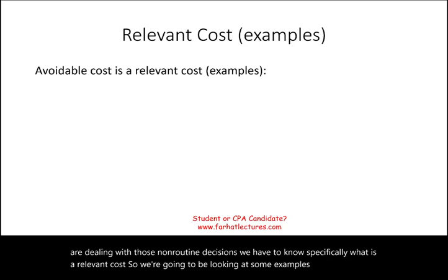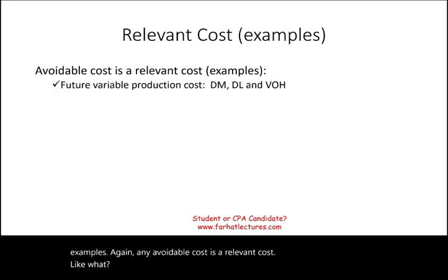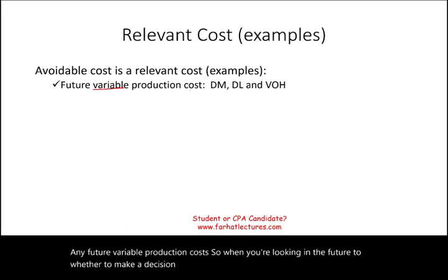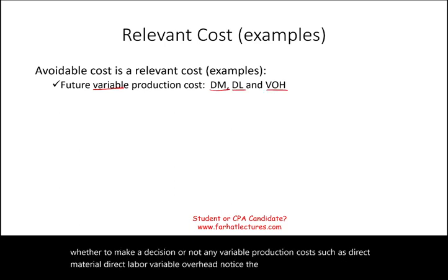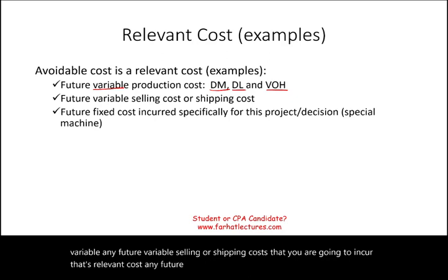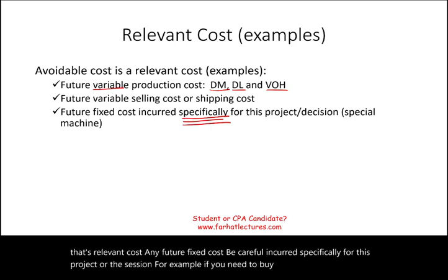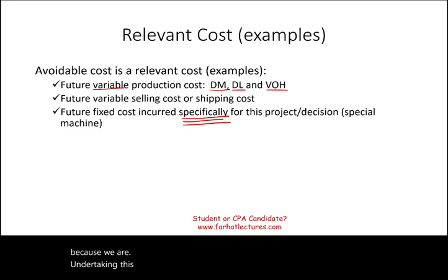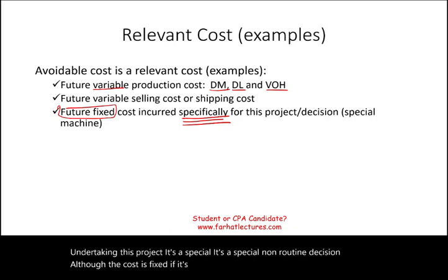When dealing with non-routine decisions, we must know what constitutes a relevant cost. Any avoidable cost is relevant. For example: future variable production costs such as direct material, direct labor, and variable overhead; future variable selling or shipping costs; and any future fixed costs incurred specifically for a particular project or decision. For instance, if you need to buy a special machine because you're undertaking a specific project, that fixed cost becomes relevant.